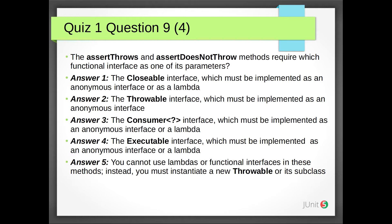Question 9: The assertThrows and assertDoesNotThrow methods require which functional interface as one of their parameters? Answer 1: The Closable interface, which must be implemented as an anonymous interface or as a lambda. Answer 2: The Throwable interface, which must be implemented as an anonymous interface or as a lambda. Answer 3: The Consumer of anything interface, which must be implemented as an anonymous interface or as a lambda. Answer 4: You cannot use lambdas or functional interfaces in these methods; instead, you must instantiate a new Throwable or its subclass. The correct answer is number 4: the Executable interface, which must be implemented as an anonymous interface or a lambda.